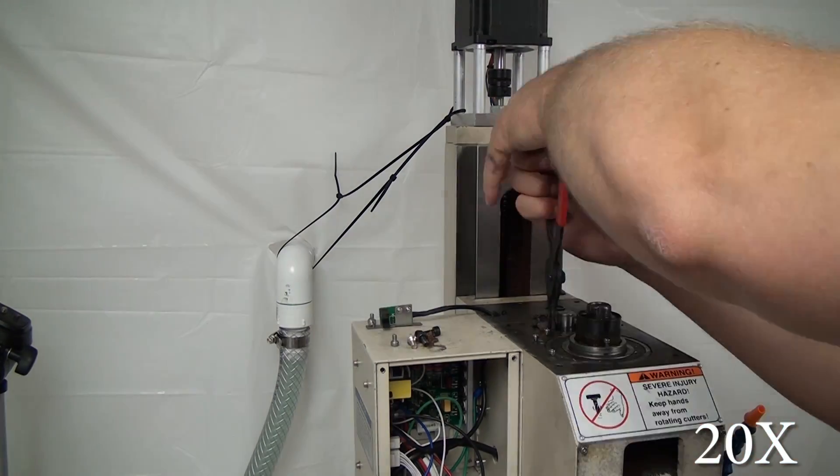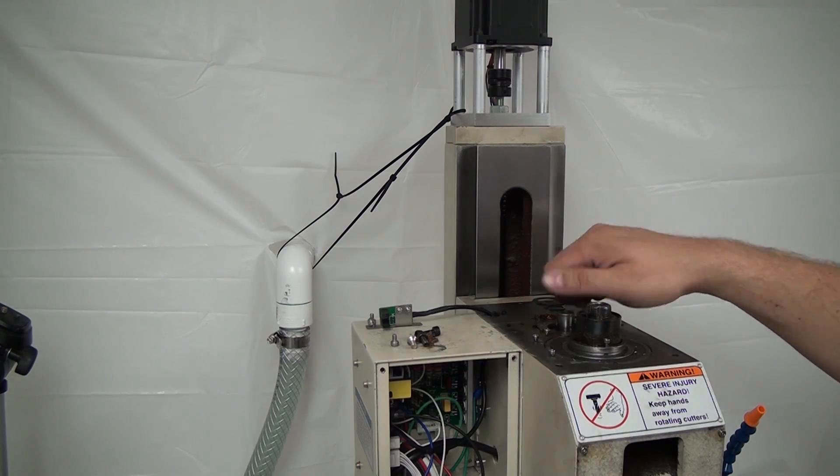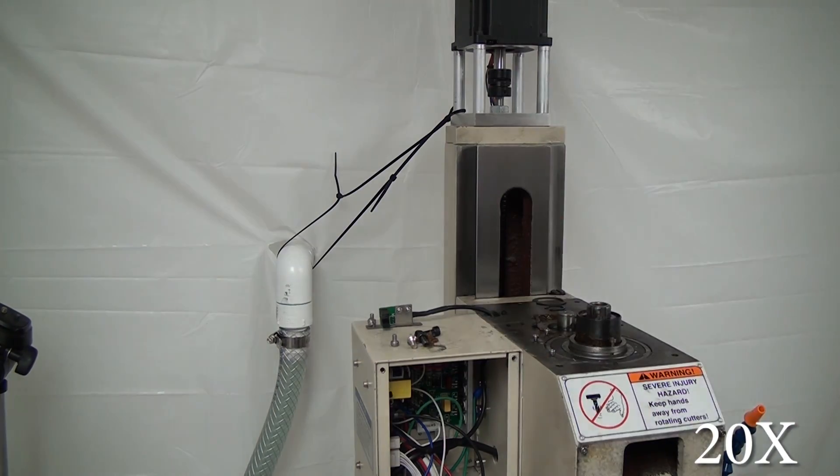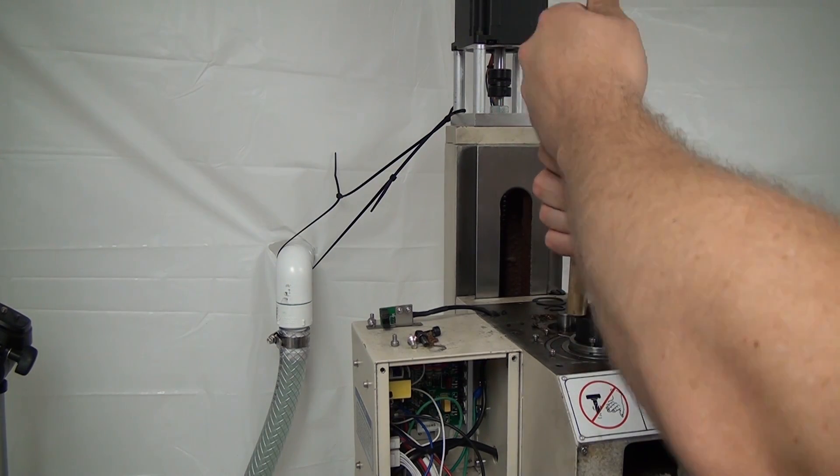There is a belt drive conversion where you can actually run the belt to the secondary shaft and then you can maintain the high-low selector, but I'm going to be running my belt drive directly to the spindle. Another snap ring and then we're going to drive the rest of that counter shaft out here in just a minute.